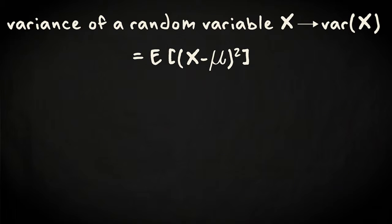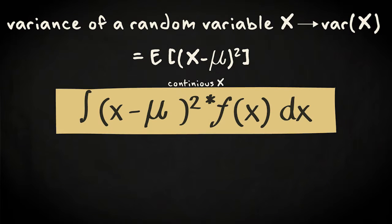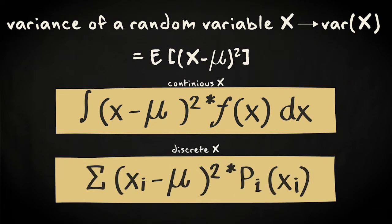If you want to calculate it on the basis of a probability distribution, it's the sum or integral of the square difference between the values that the variable may take and its mean times their probabilities. These are the equations for that calculation for a continuous and a discrete random variable.